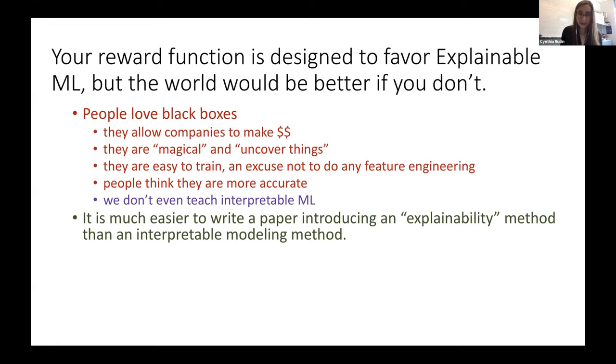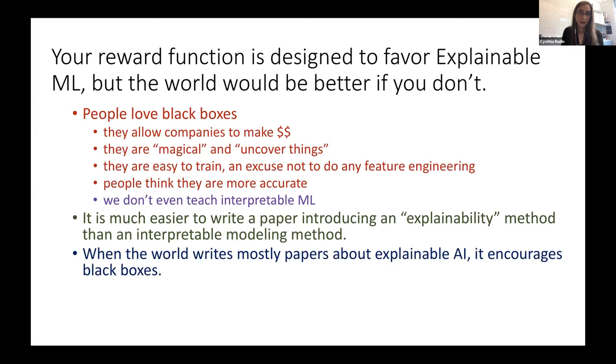It is much easier as an academic to write a paper introducing an explainability method than an interpretable modeling method because explainability methods have often involved just taking derivatives, whereas interpretable modeling requires solving a hard optimization problem with interpretability constraints. When the world writes mostly papers about explainable AI, it actually encourages black boxes because people think that you can just make a black box and somebody can explain it. So you might as well just make the black box.